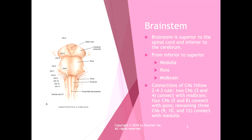The brainstem is superior to the spinal cord and inferior to the cerebrum — it is literally a bridge between the spinal cord and the cerebrum. From inferior to superior we have the medulla, pons, and midbrain; from superior to inferior it is midbrain, pons, medulla. Pons means bridge, and medulla is short for medulla oblongata — that oblong, elongated area at the base of the brainstem. The midbrain is in the middle of everything.